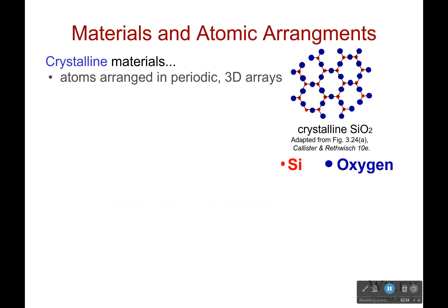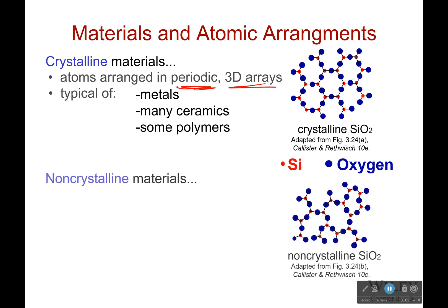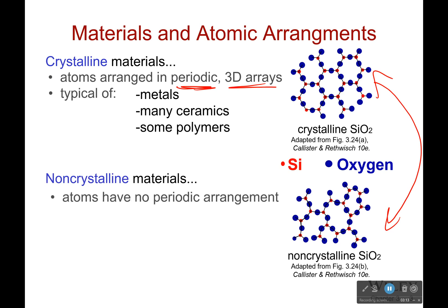Crystalline materials have atoms arranged in periodic 3D arrays. This is typical of metals — metals are just a bunch of atoms all stacked together. Think of water bottles packed together; when you look at them from the side, they all fit perfectly, and that's how metals are. Some polymers are like this, not as many, and some ceramics. Sometimes you have a crystalline version and a non-crystalline version of the same material. In the non-crystalline case, there's no periodic arrangement — if I take any particular section, it's not repeating. But in the crystalline case, any section I take will repeat in other places.